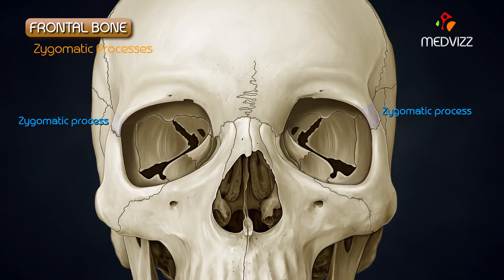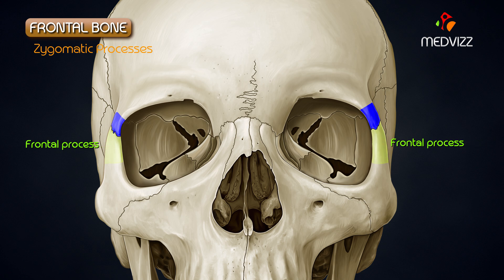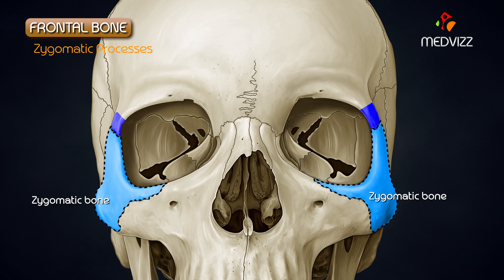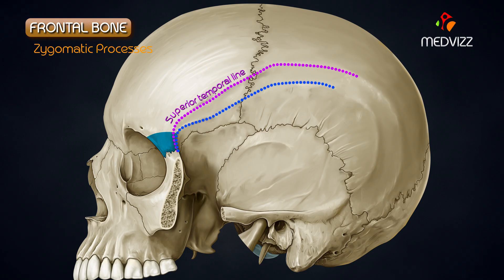Zygomatic processes. On each side, it extends downwards and laterally from the lateral end of the supraorbital margin. The zygomatic process joins the frontal process of the zygomatic bone. From the posterior margin of each zygomatic process, the temporal line curves upwards and backwards and splits into superior and inferior temporal lines.